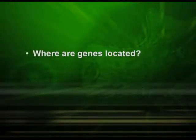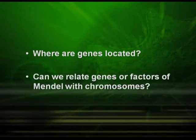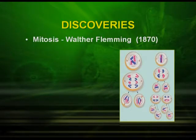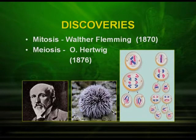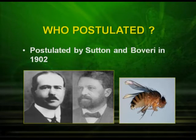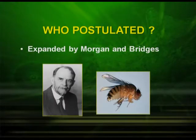We are going to answer two important questions: where are genes located, and can we relate genes or Mendelian factors with chromosomes? To answer this, let us go back to the discovery of cell division — mitosis, discovered by Walther Fleming in 1870, and meiosis, discovered by O. Hertwig in 1876 in Sea Urchin. In 1900, Mendelian inheritance was rediscovered. In 1902, Sutton and Boveri postulated the Chromosomal Theory of Inheritance, later expanded by Morgan and Bridges.